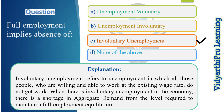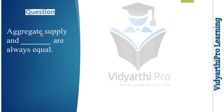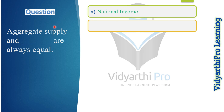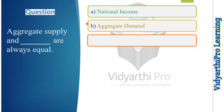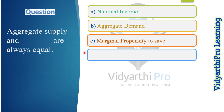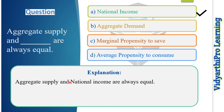Our next question: aggregate supply and what are always equal? Option one: national income. Option two: aggregate demand. Option three: marginal propensity to save. Option four: average propensity to consume. The correct answer is option A, national income — aggregate supply and national income are always equal.